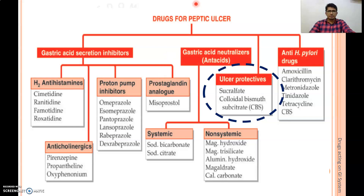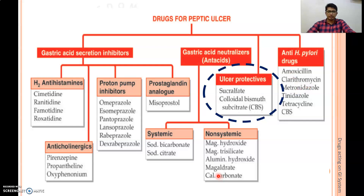We are discussing drugs used for the treatment of peptic ulcer. In the previous four videos we discussed the introduction to peptic ulcer and the pharmacology of different drugs like H2 antihistamines, proton pump inhibitors, anticholinergics, prostaglandins, and antacids. In this video, we will discuss the pharmacology of ulcer protective agents and anti-H. pylori drugs.